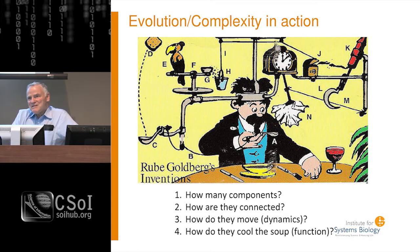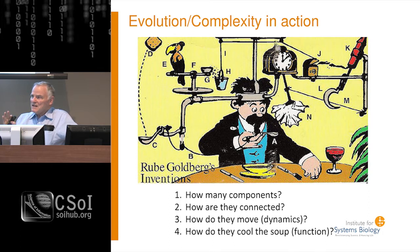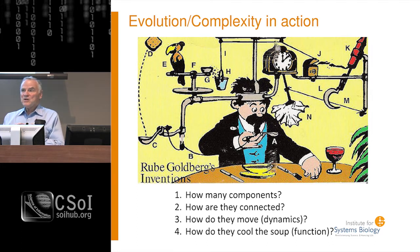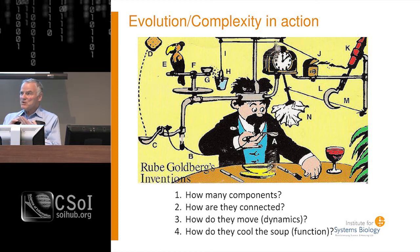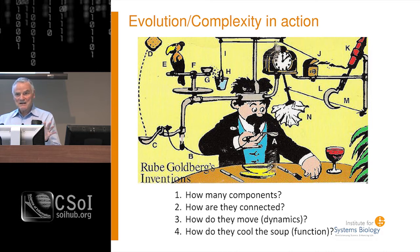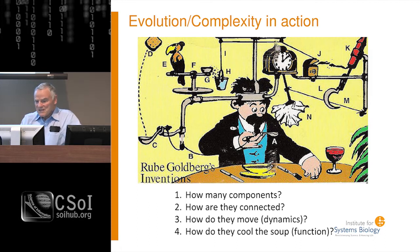An essential principle is that you can only decipher biological complexity from the bottom up — you need to start with the data as a reality test of what really is. The complexity of biology reminds me of a Rube Goldberg cartoon where 14 different instruments are strung together to cool soup. To understand how that device works — that biological circuit — you'd need to identify all the components, establish how they're connected, and assess the dynamics of the device as it executes its function. Those are exactly the parameters we need for systems approaches to biology and disease.